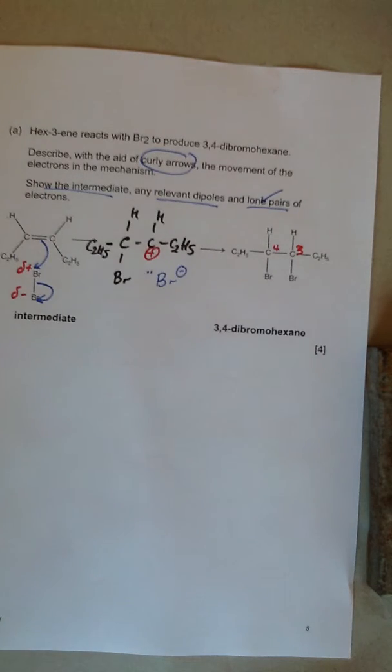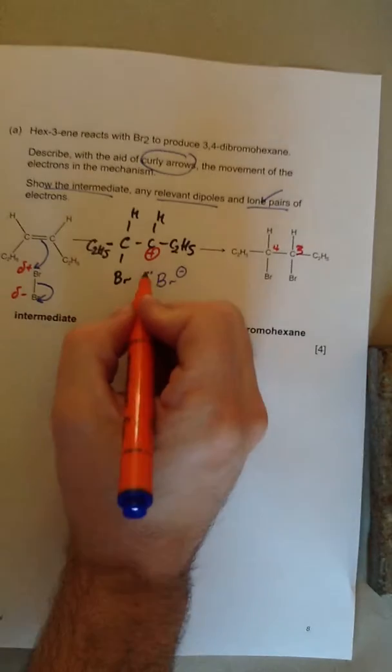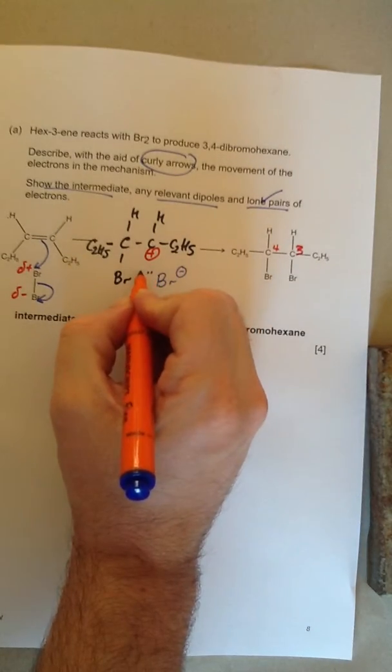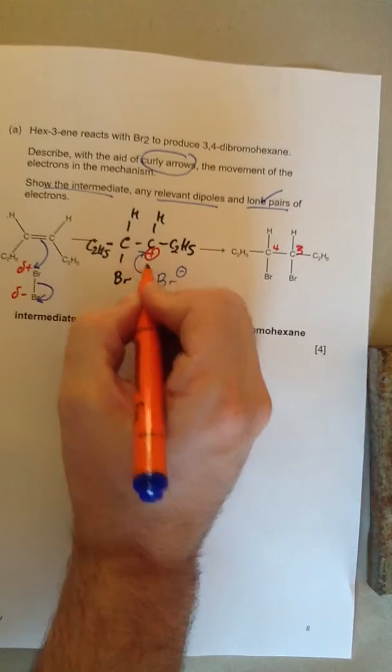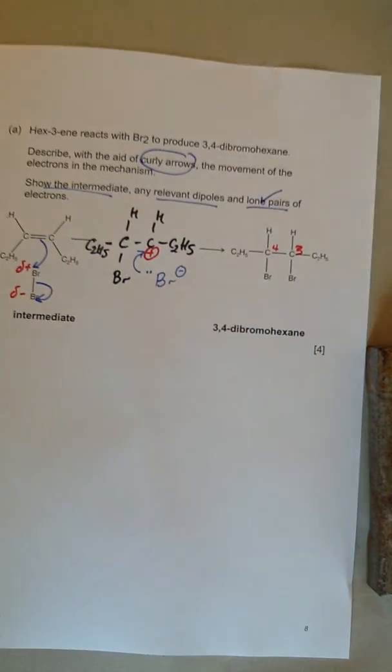So to complete this, we need to have the lone pair from the Br minus attacking the C plus. This is called a carbocation. And it goes from negative to positive. And that gives us our product, the 3,4-dibromohexane.